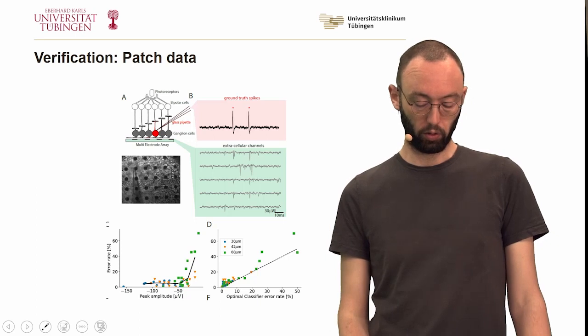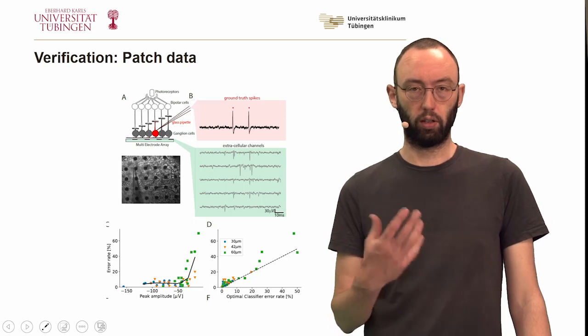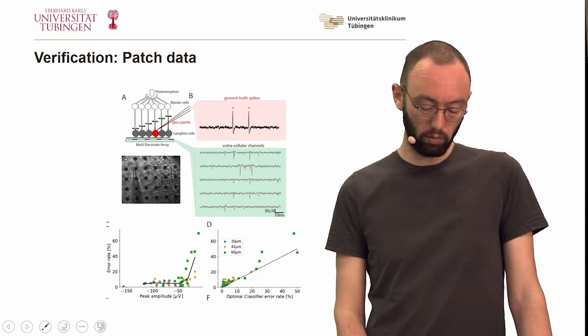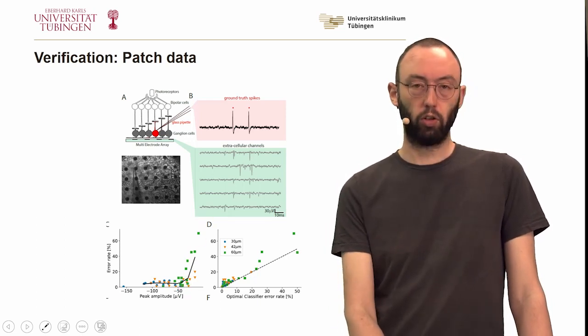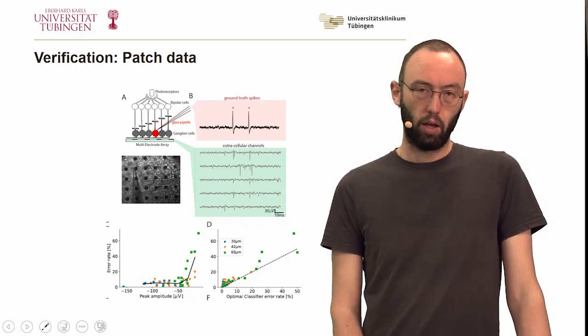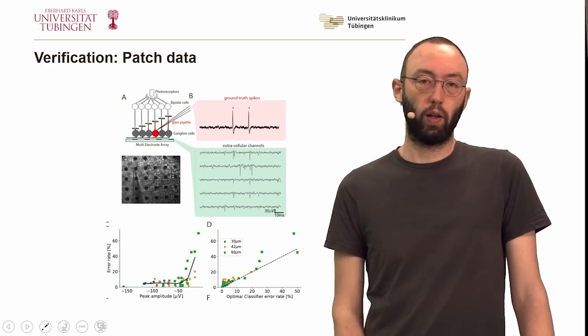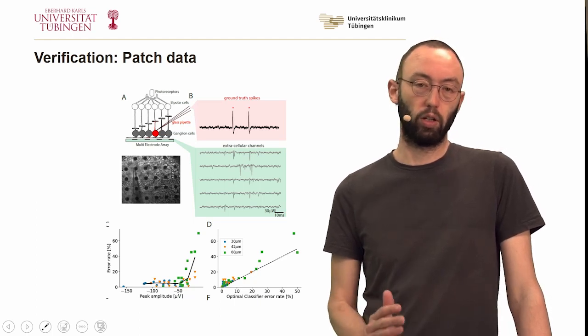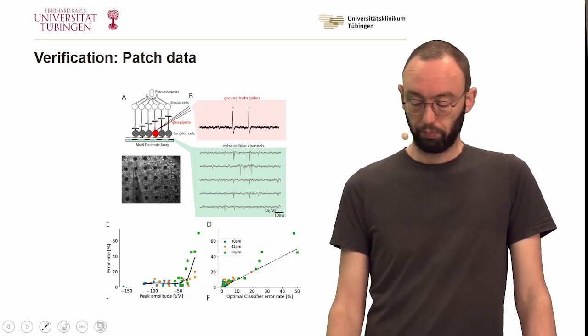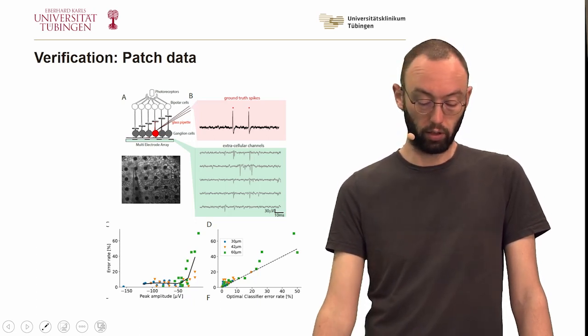They recorded a few dozen of these neurons with both techniques, and by that they could then evaluate how well the neurons could be recovered. And not surprisingly, the neurons that had the largest peak amplitude in their spikes, so that had the most clearly visible spikes, they could also be recovered more easily, and there was a certain threshold from which on the recovery rate or the error rate became much higher. One takeaway is that one shouldn't try to salvage single units that are really close to the noise level or to the multi-unit level. This is really an objective evaluation of the algorithm.